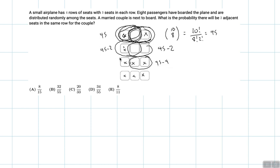Same idea: if we pick these two seats, we've double-counted multiple combinations, so also 45 minus 4 here. And lastly, continuing the pattern, we would have double-counted several more pairs, giving us 45 minus 6 here. And same idea if these two adjacent seats were empty: 45 minus 6.